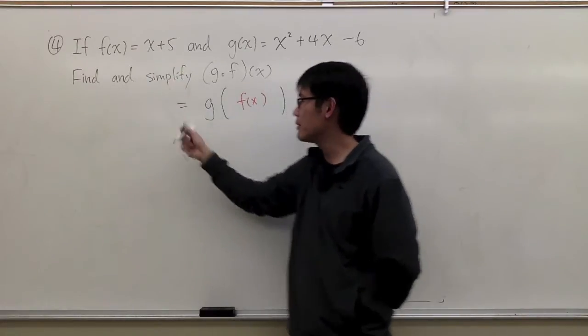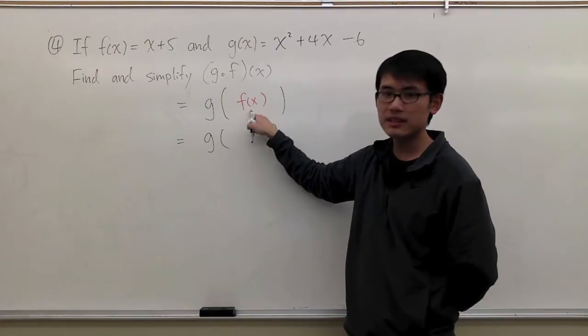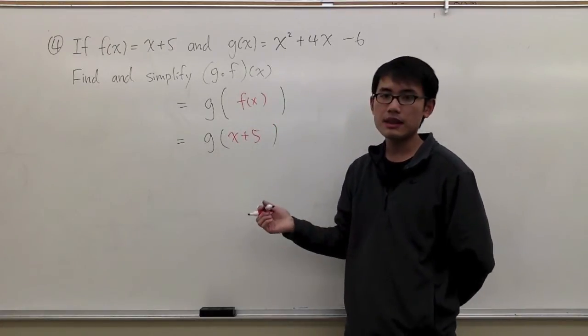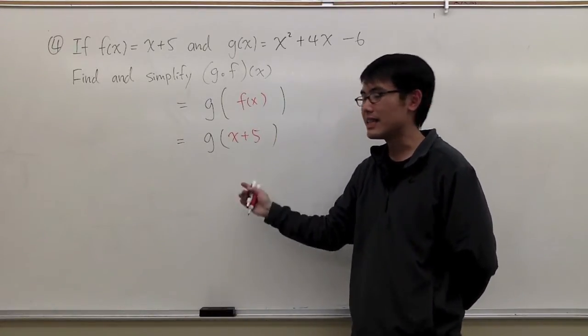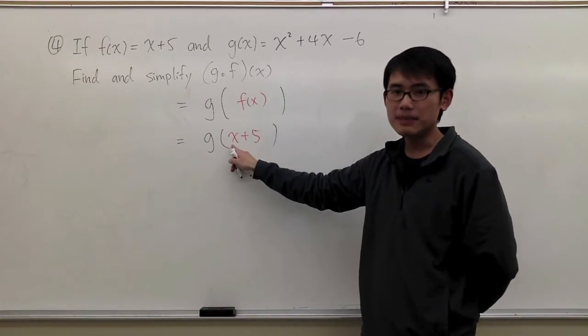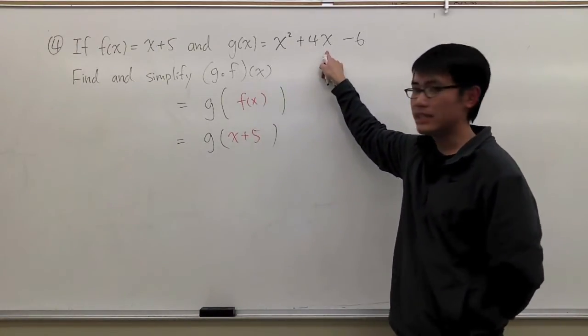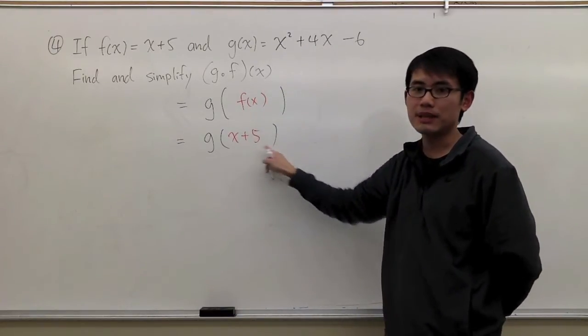So my first step will be, this is the same as g of f of x is now x plus 5. And then the way to do this, g of x plus 5, is that we are going to plug in x plus 5 into the function g. Wherever we see the x, we are going to replace the x with my red x plus 5.